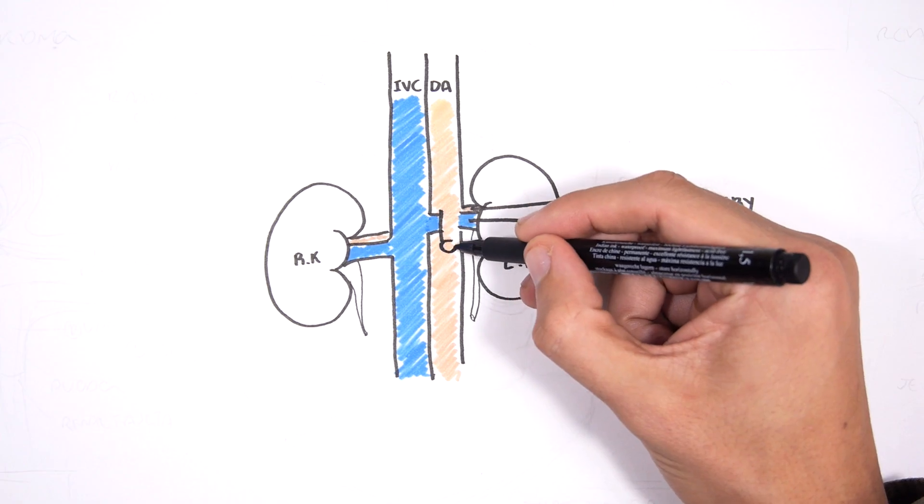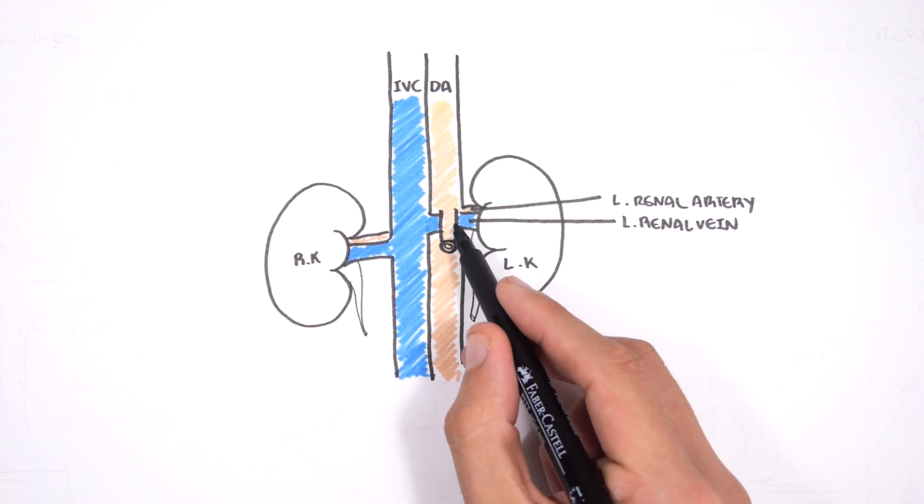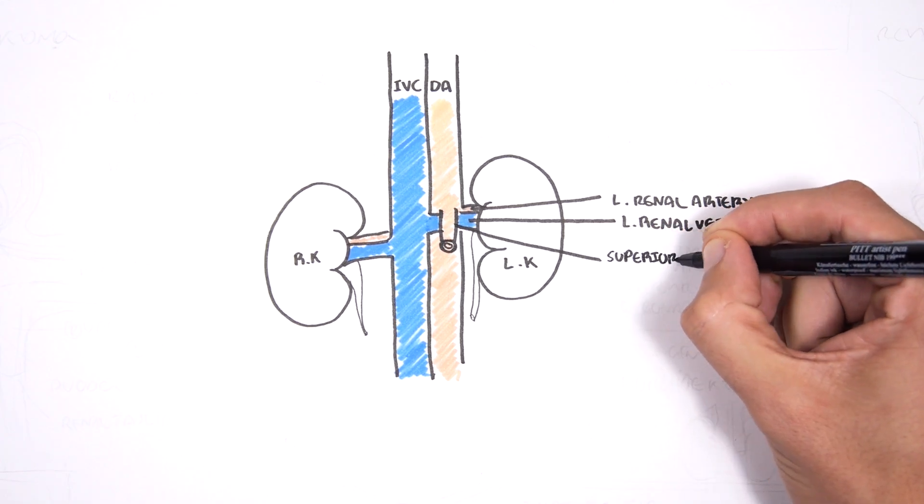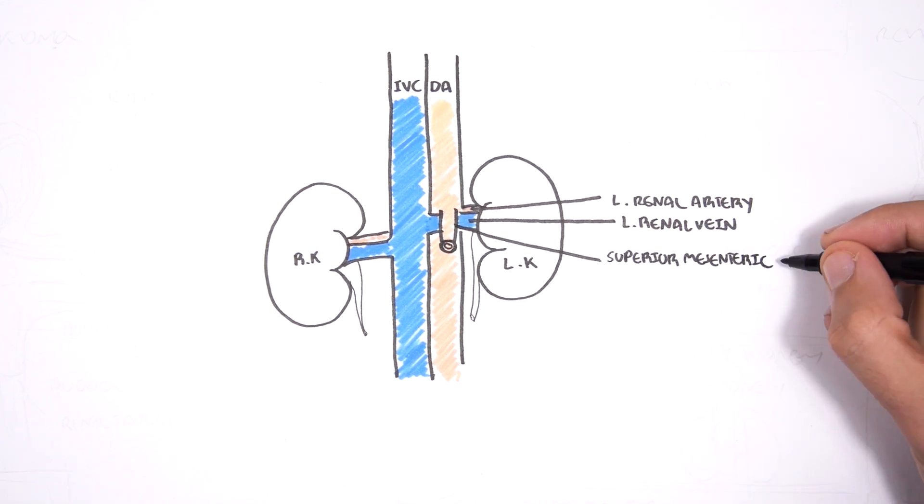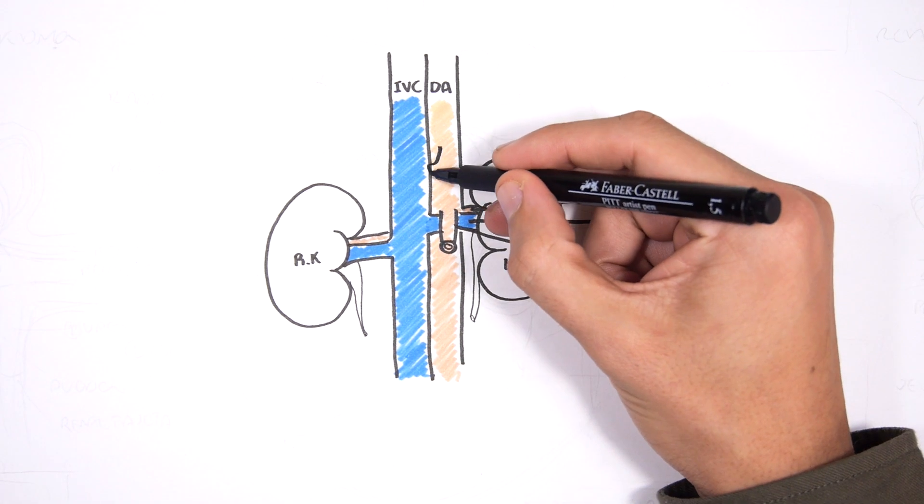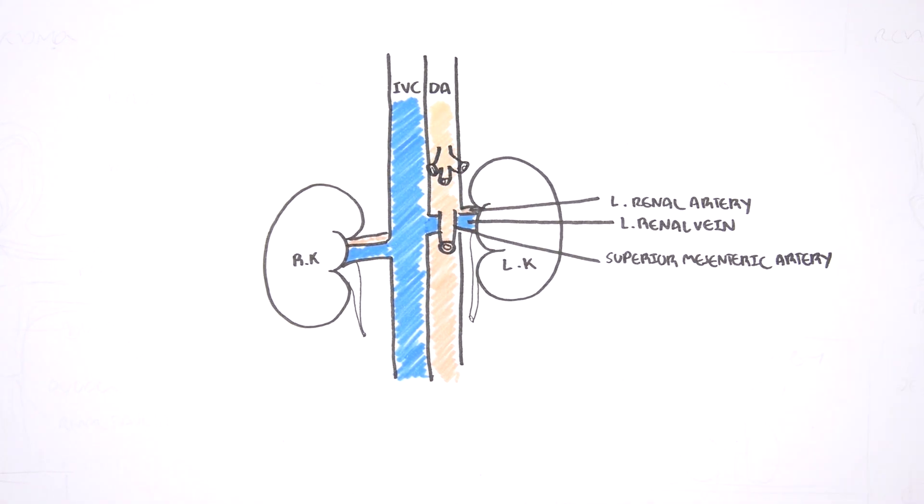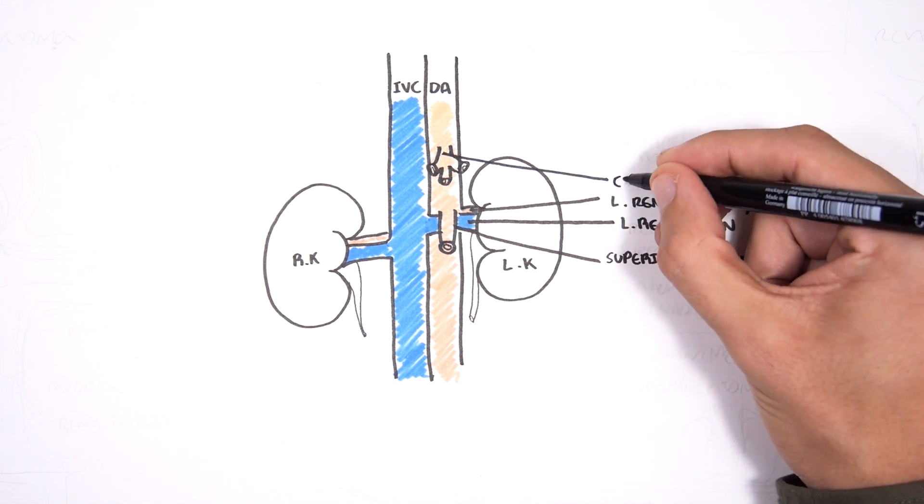The superior mesenteric artery branches at around the same level as the renal arteries at L1 to L2 vertebral level. The superior mesenteric artery goes actually over the left renal vein. Above the superior mesenteric artery you have the celiac trunk which branches at about the T12 vertebral level.